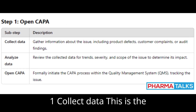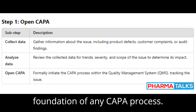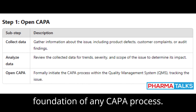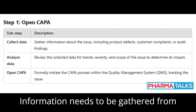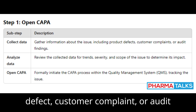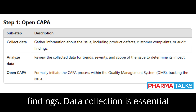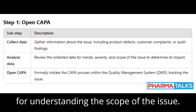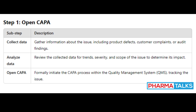Step 1: Collect Data. This is the foundation of any CAPA process. Information needs to be gathered from various sources, whether it's a product defect, customer complaint, or audit findings. Data collection is essential for understanding the scope of the issue.